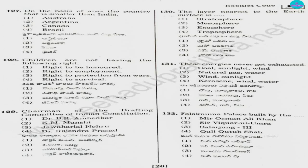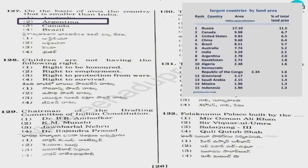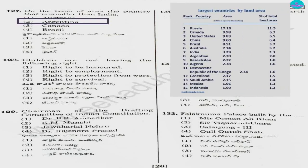Question number 127. On the basis of area, the country that is smaller than India is: 1) Australia, 2) Argentina, 3) Canada, 4) Brazil. Answer is option 2, Argentina. Here I have given the tabular form. You can see: Russia, Canada, US, China, Brazil, Australia, India, and after India it is Argentina.